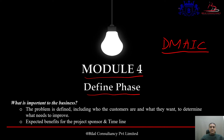The DMAIC methodology, as we have studied earlier, we can implement this methodology when we want to improve our existing process. Whereas the other methodology, which is DMADV, is used in the Design for Six Sigma project. In DMAIC, D stands for Define, Measure, Analyze, Improve, and Control.